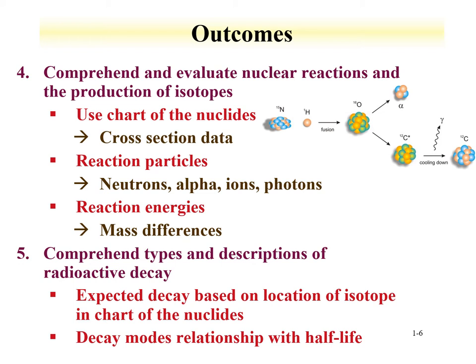We should also explore and understand the different types of radioactive decay. By evaluating the chart of the nuclides, we can understand the location of isotopes and the probability of certain decays. For instance, heavier isotopes tend to decay by alpha; those isotopes that are proton-rich tend to decay by positron emission or electron capture; those that are neutron-rich tend to decay by beta minus. We'll also discuss relationships between half-life and decays.